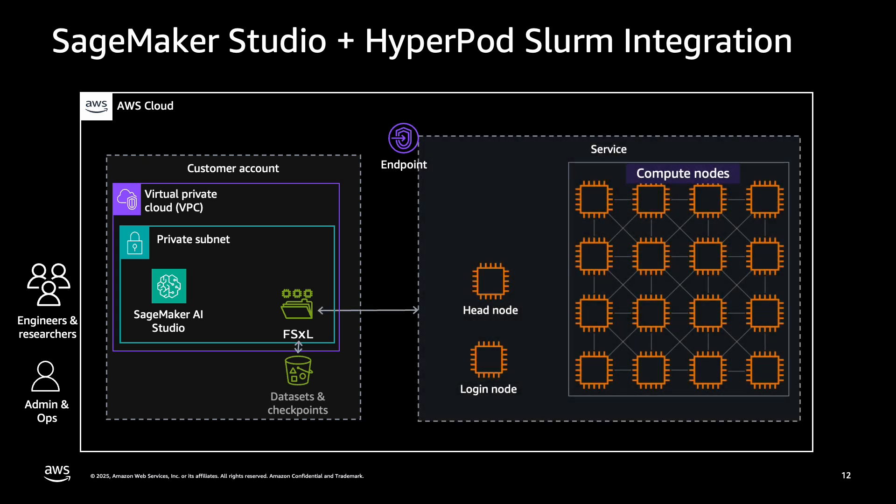As researchers and data scientists, we can use our IDE of choice to prototype our own code, save data, and share directly in our FSx volume. This volume is also attached to the HyperPod cluster to ensure that this information can be used to start the execution of our training workloads. Additionally, as an admin, we can monitor directly from the login node the execution of these workloads, as well as leverage capabilities accessible from SageMaker AI to monitor task execution from the IDE.